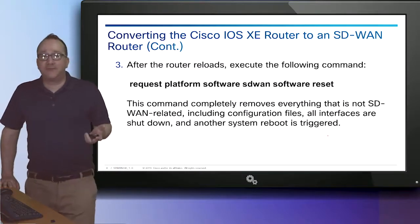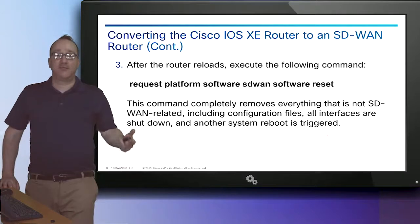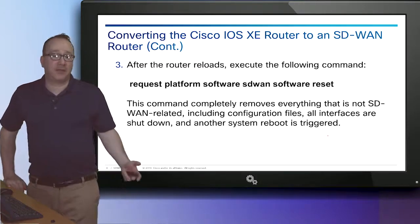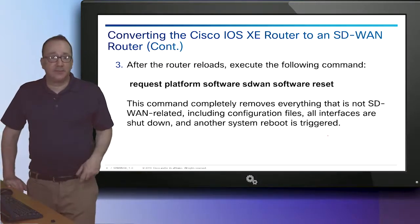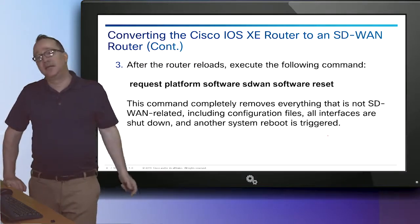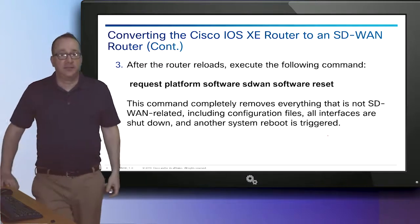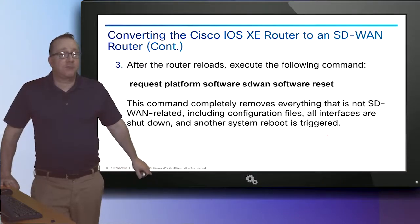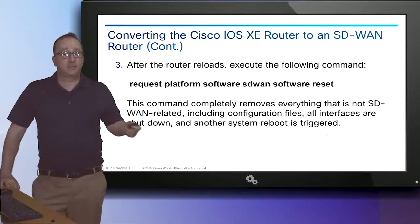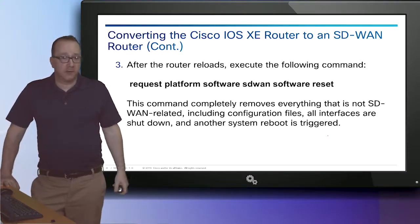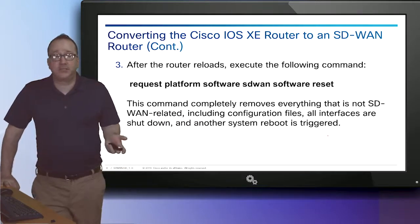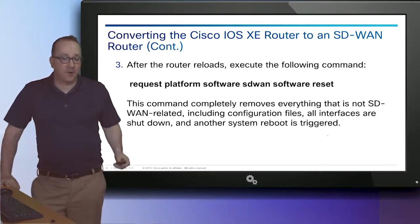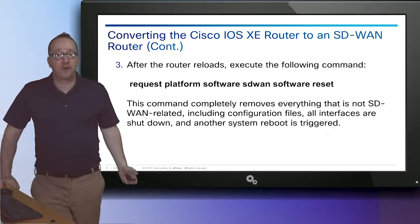After the router reloads, execute the command: request platform software SD-WAN software reset. Be advised — if your router has any advanced features like unified communications, a UCS module, or wide area application acceleration, those are going to be disabled. This is why we discuss leaving those routers in place and integrating an SD-WAN solution next to them as a brownfield deployment, rather than replacing the device. The command completely removes everything that's not SD-WAN related, so if you have DSPs or a UCSE module, all that configuration will be removed and all interfaces will be shut down.